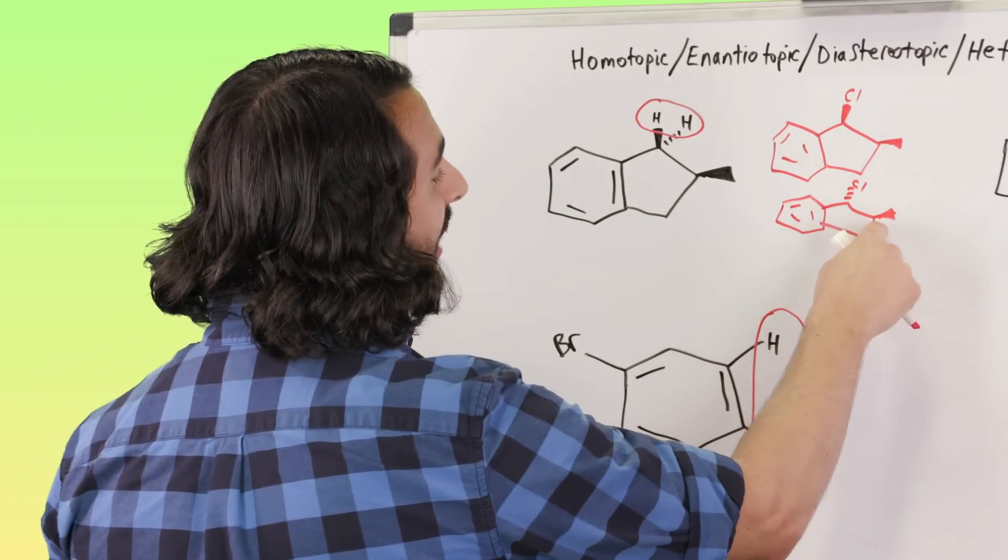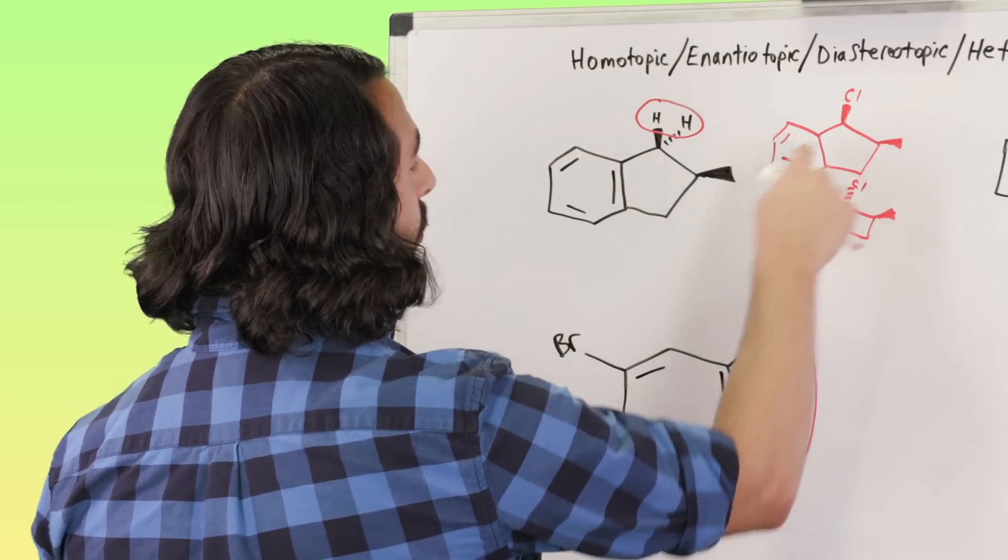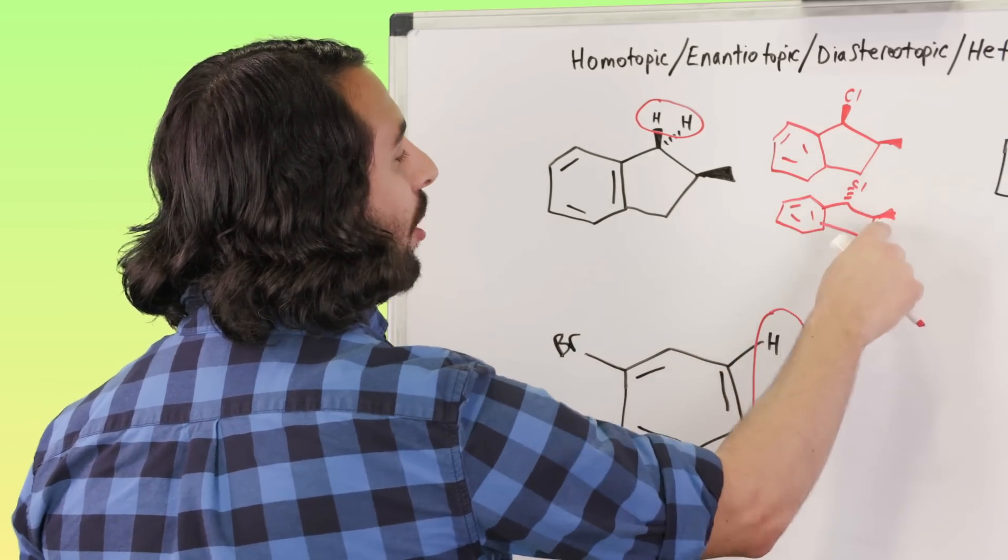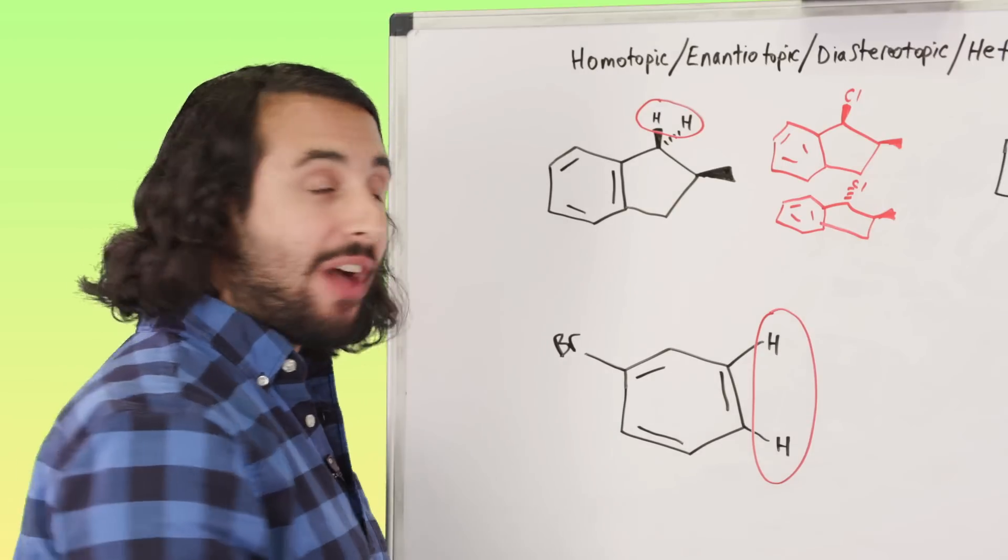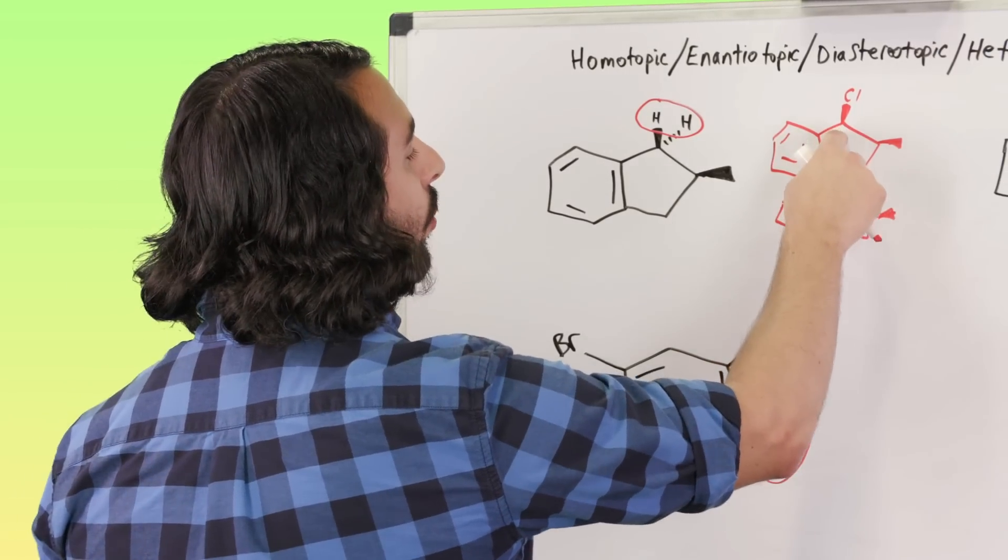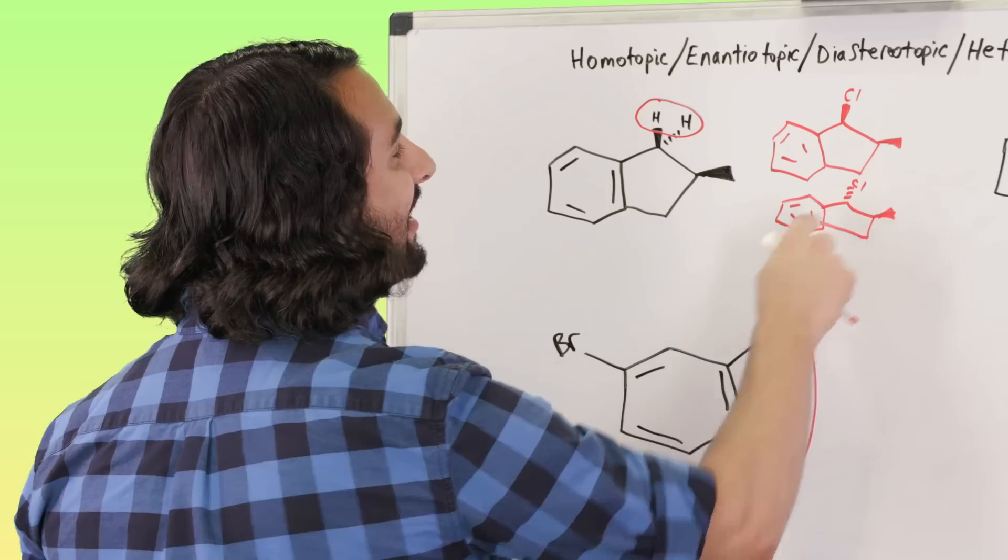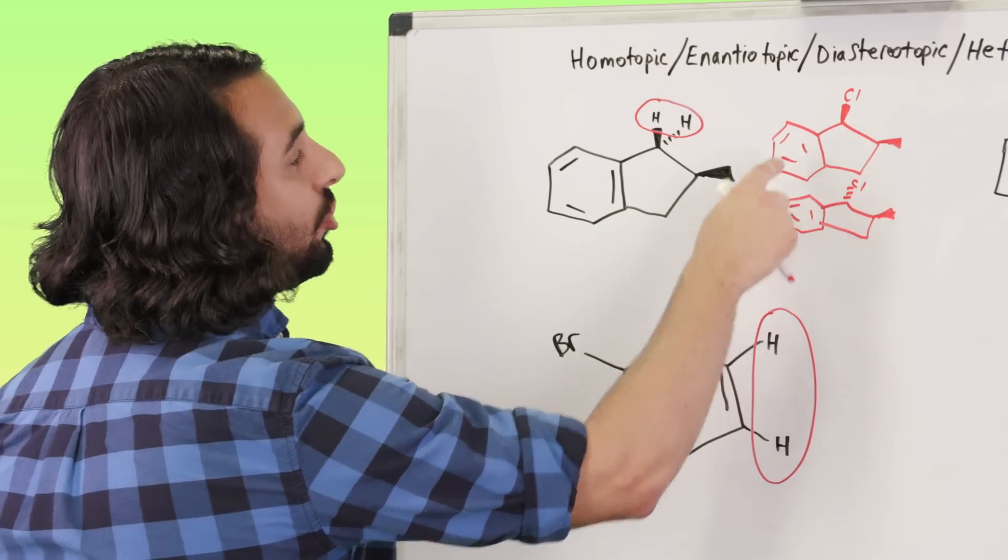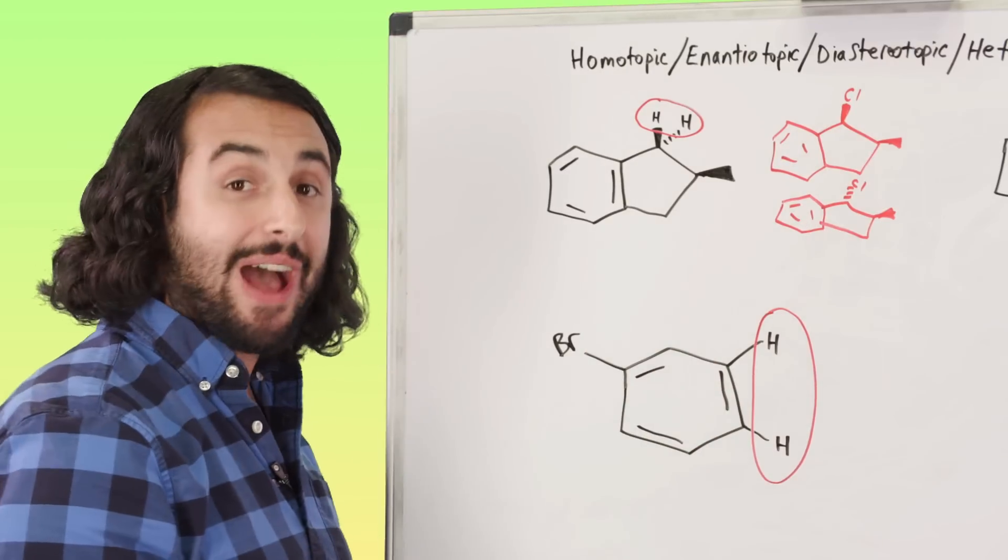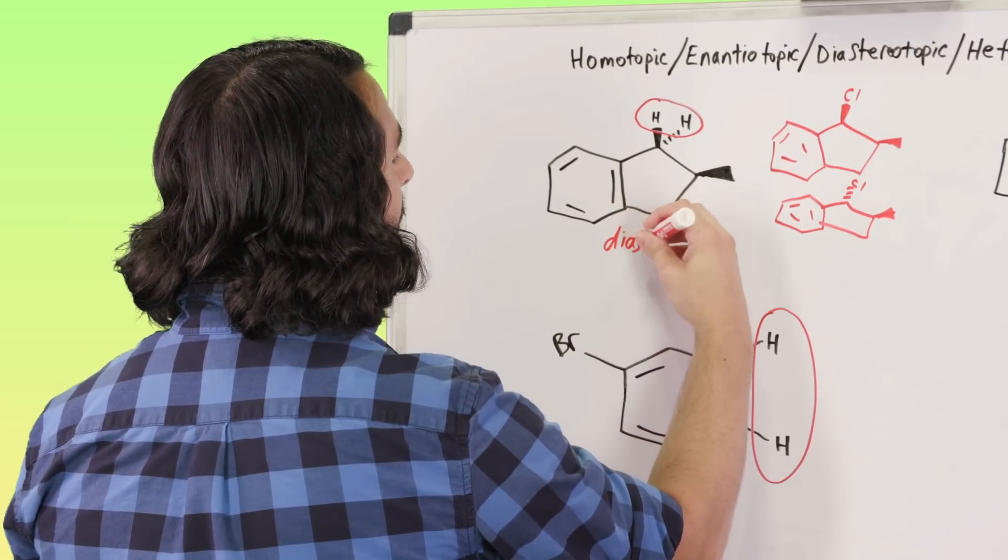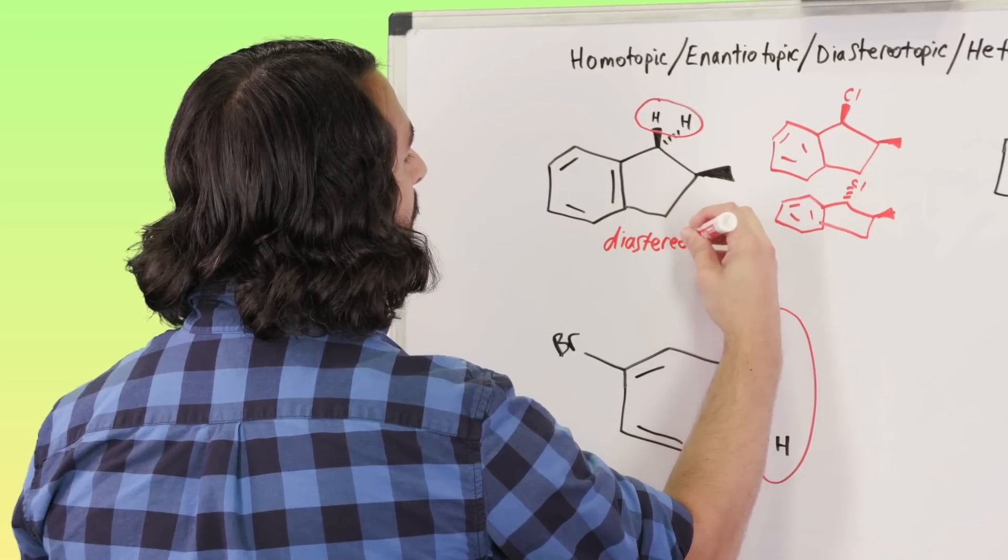However, there is another chiral center over here, which maybe wasn't a chiral center before, but because of the chlorine here, this is now also a chiral center, and the chirality does not change between these two molecules. So these clearly have a diastereo, these are two, these are definitely two diastereomers, so these have a diastereotopic relationship. So we are going to say that these protons are diastereotopic.